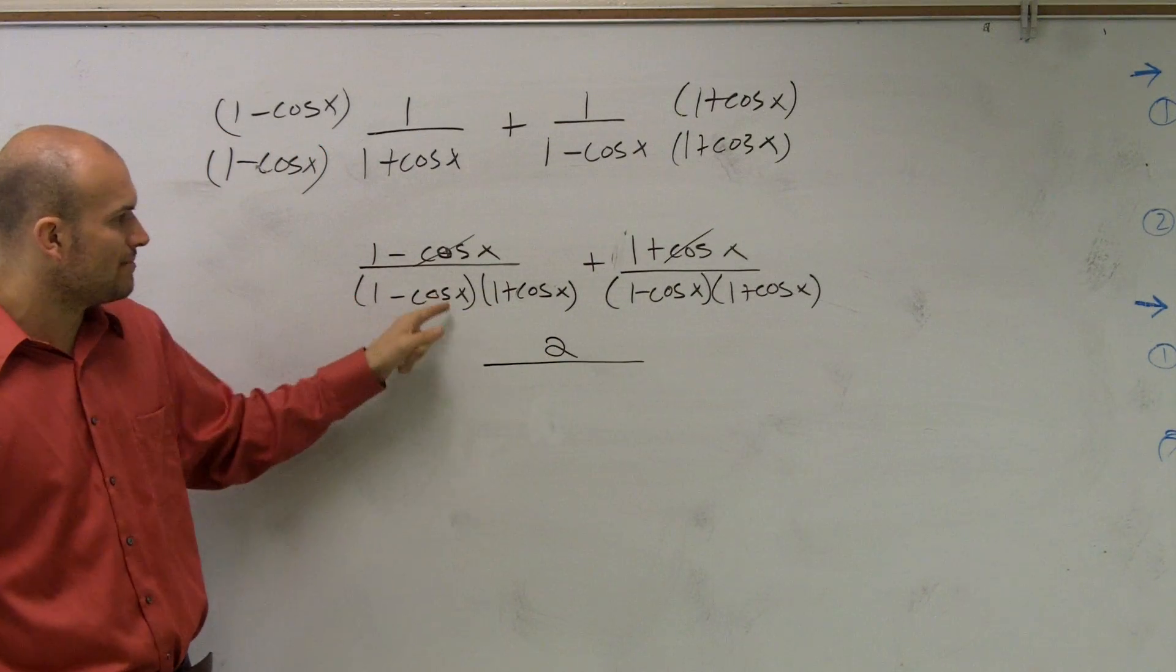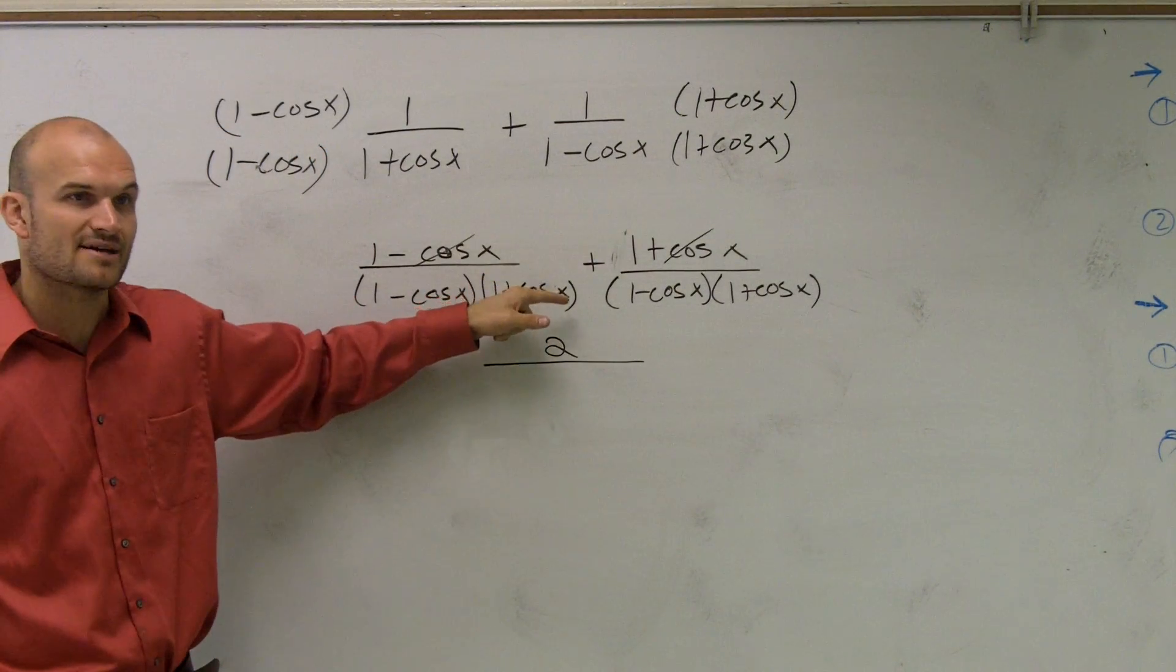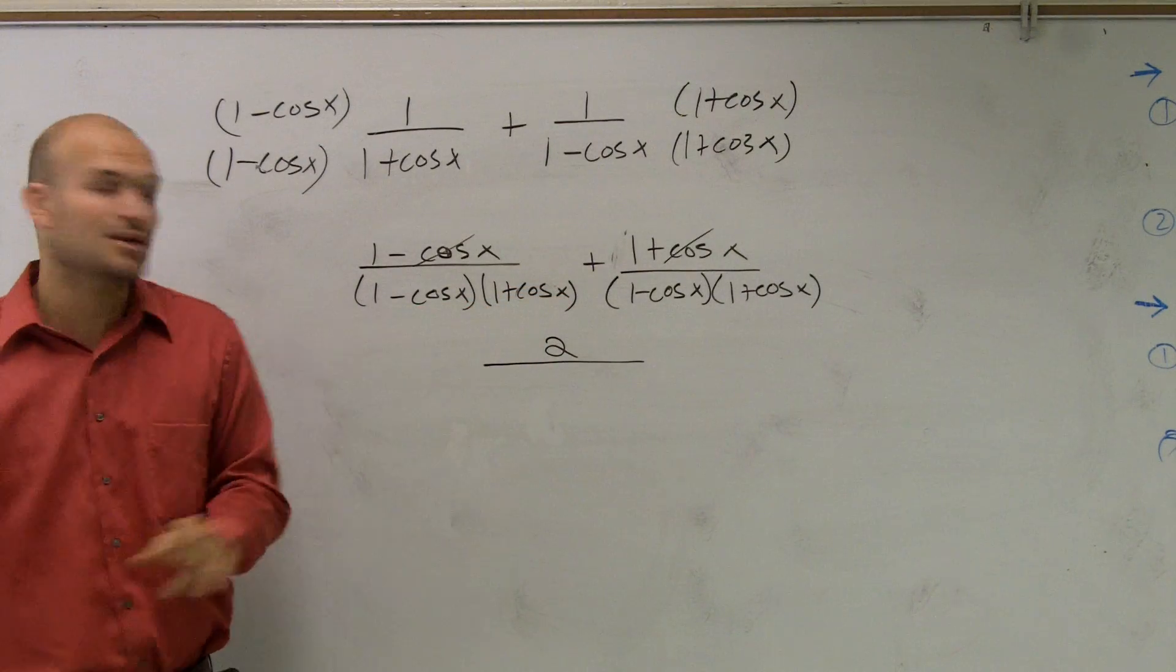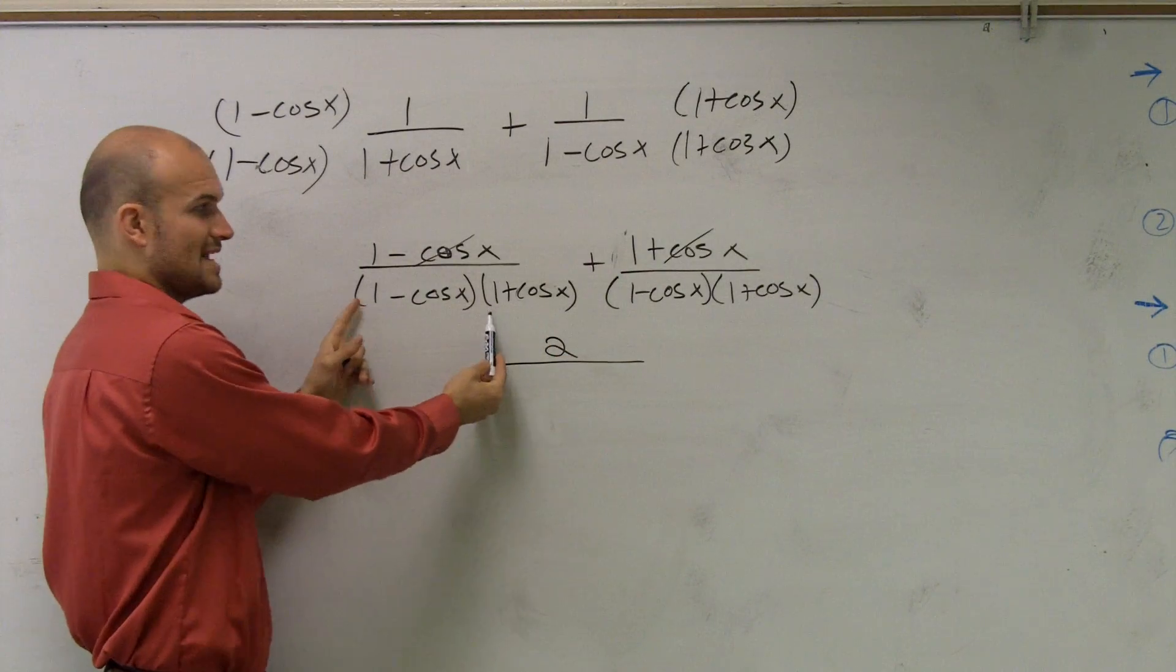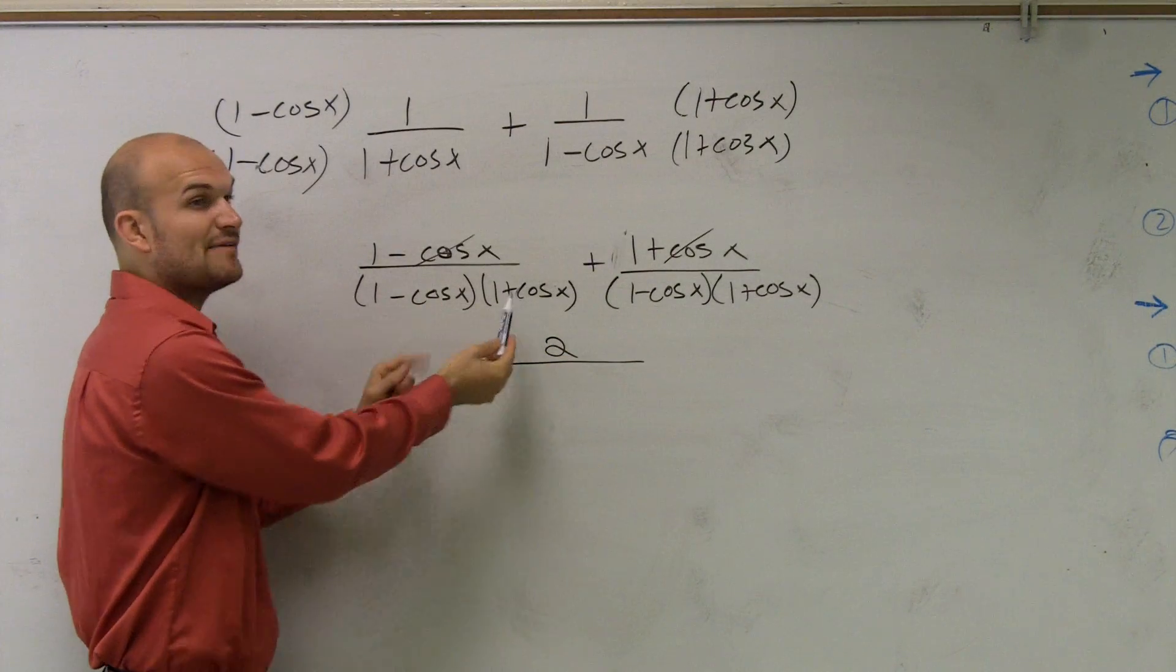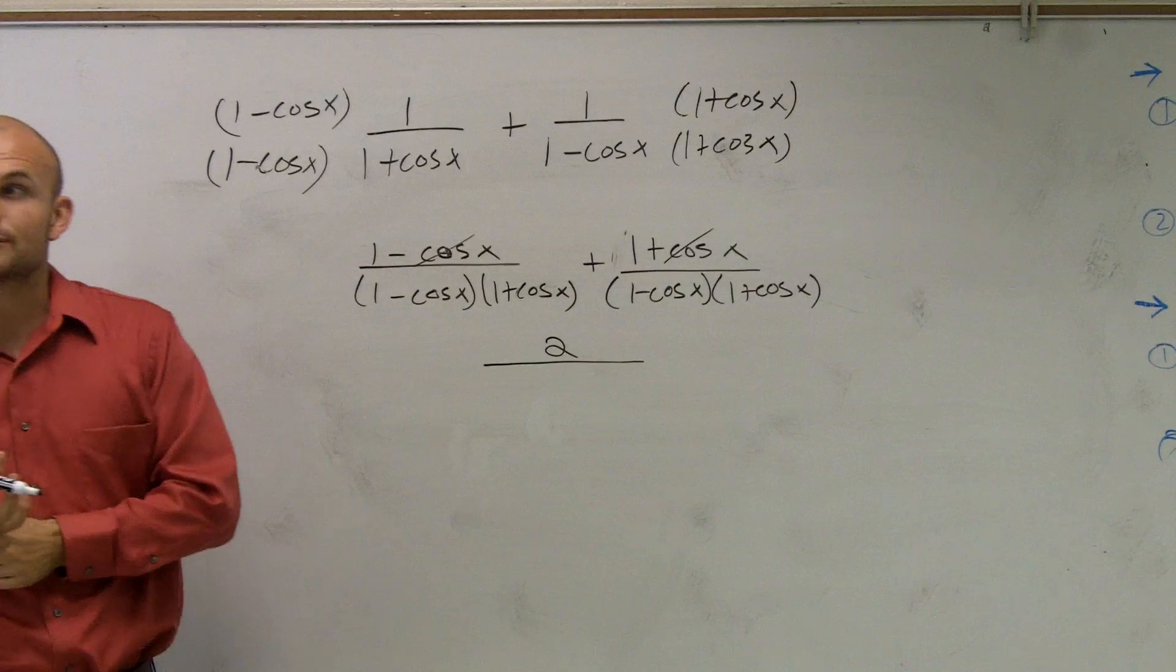Now, you could write 1 minus cosine squared plus 1 plus cosine of x, but not a lot of times I'd multiply that out. But what I notice is, this is a difference of two squares, isn't it? My first terms are the same, and my last term are the same, and I have opposite signs.